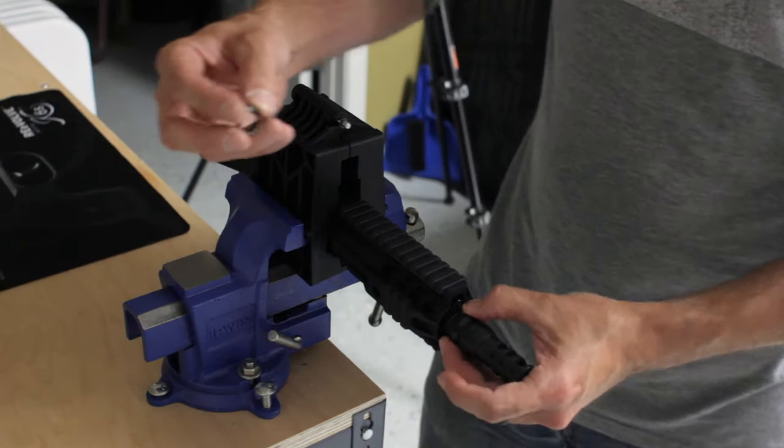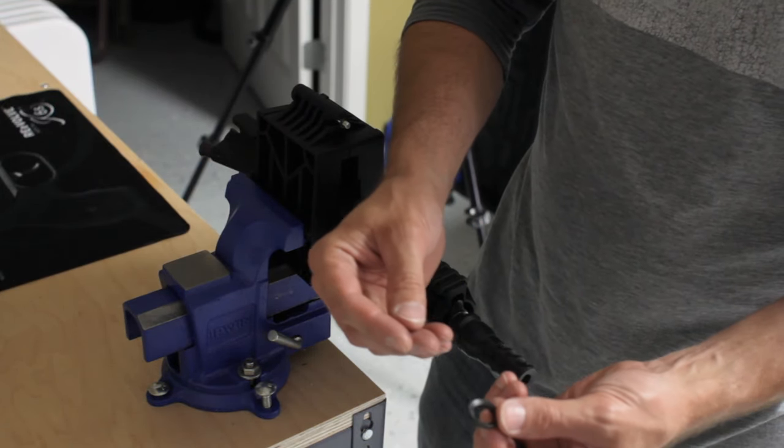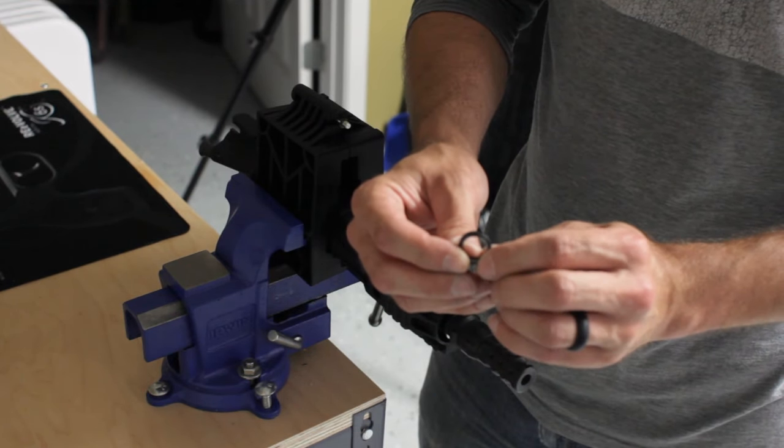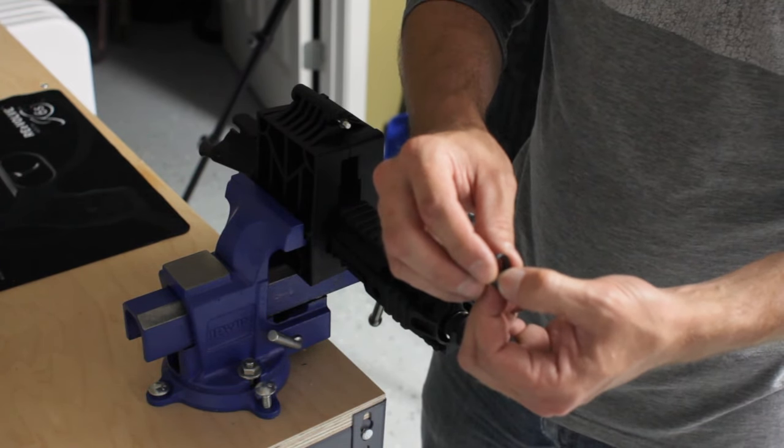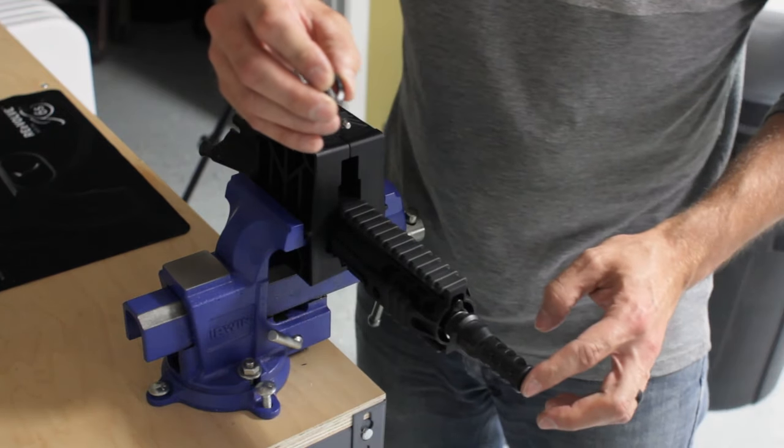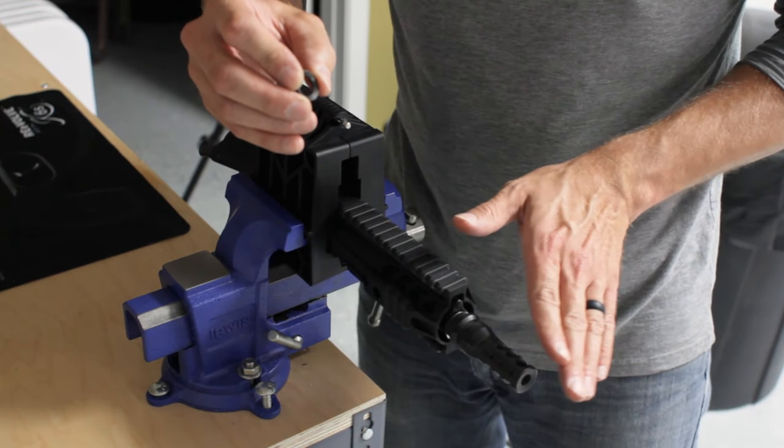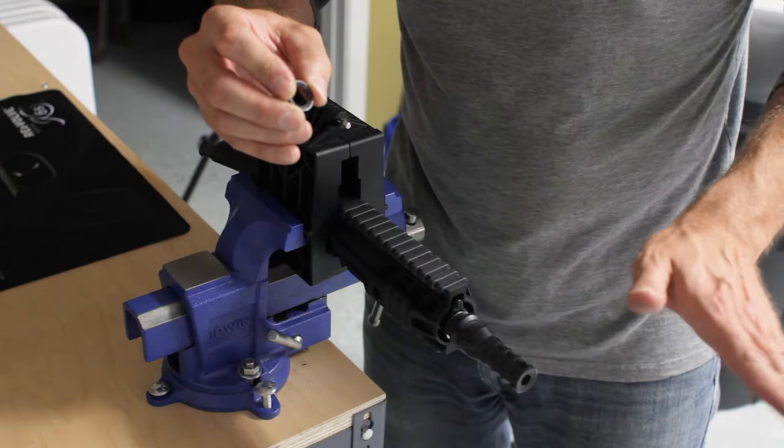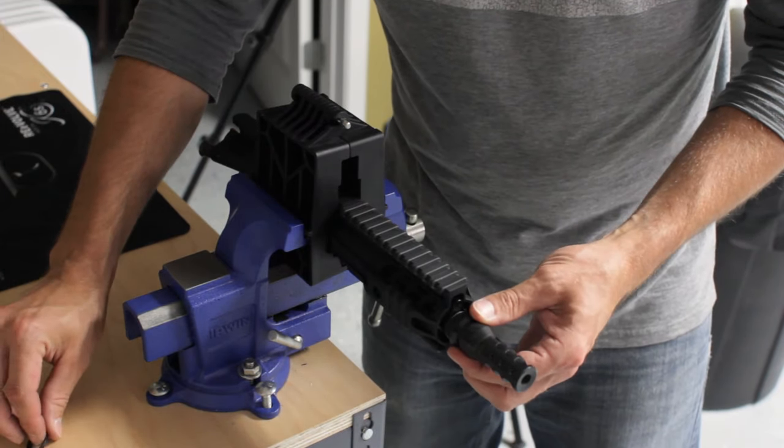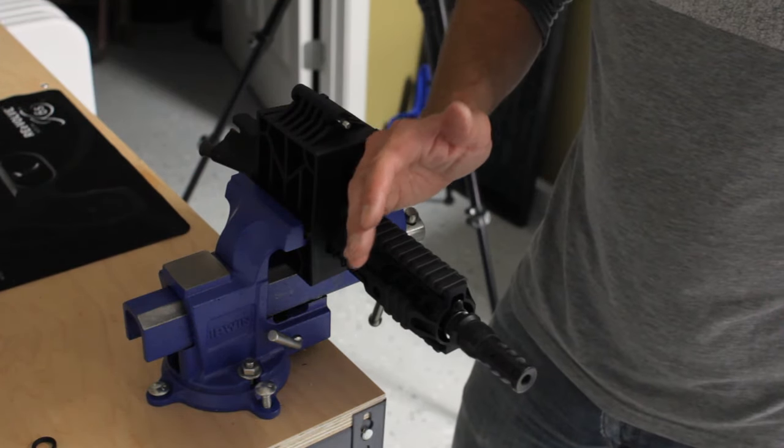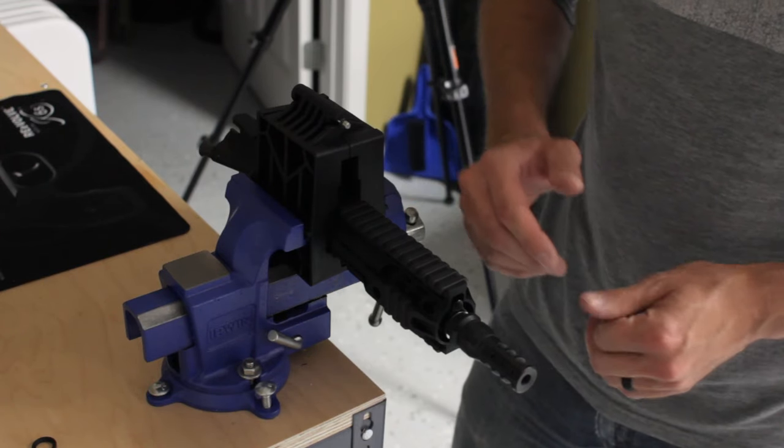And the difference between the timing shims and a crush washer, and you can see a crush washer here, is that a crush washer will crush unevenly. And when that crush washer crushes unevenly, it can actually cause the muzzle brake to be at a cant one direction or at an angle, which on the end of your suppressor would actually have your suppressor canted. And that can actually cause baffle strikes.